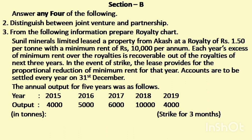Question No. 3: From the following information, prepare a royalty chart. Sunil Minerals Limited leased a property from Akash at a royalty of Rs. 1.50 per tonne with a minimum rent of Rs. 10,000 per annum. Each year's excess of minimum rent over the royalties is recoverable out of the royalties of the next three years. In the event of a strike, the lessee provides for the proportional reduction of minimum rent for that year. Accounts are to be settled every year on 31st December. The annual output for 5 years was as follows.